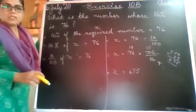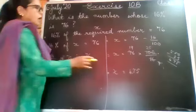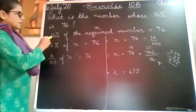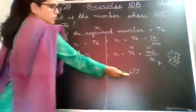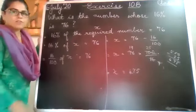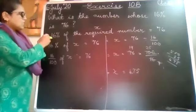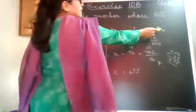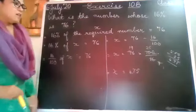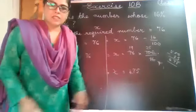So if you want to check your answer, you can do it. Now you have got that 16% of a required number, and the required number we found out is 475. So when you do 16% of 475, you should get 76. Then this number of yours is correct.